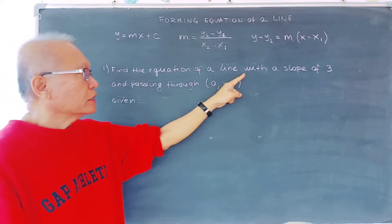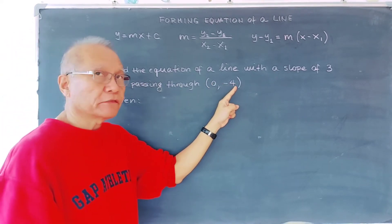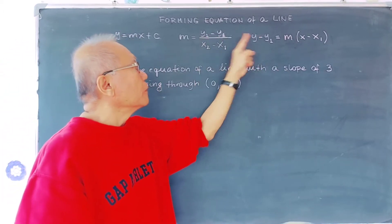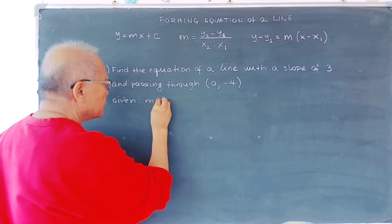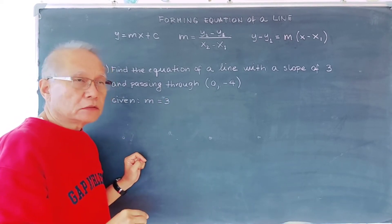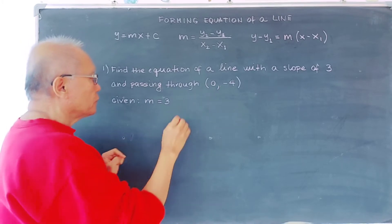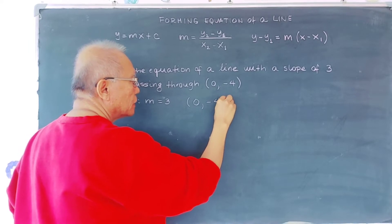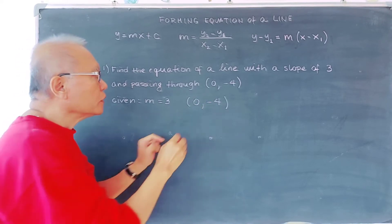We use the point-slope formula only when we already have the slope. If the slope is not yet given and we are given two points, we need to first use the slope formula. Let's have an example: find the equation of a line with a slope of 3 and passing through (0, -4). Our given slope is m = 3, and our point is (0, -4).